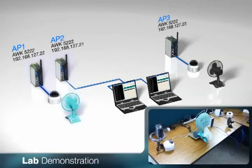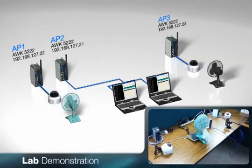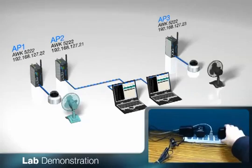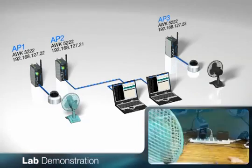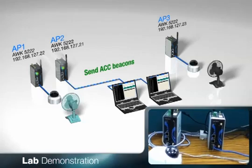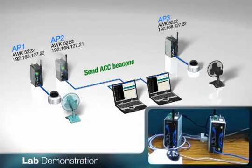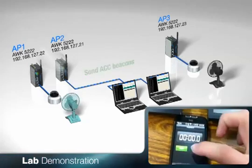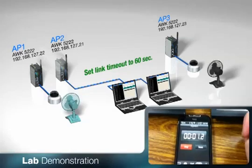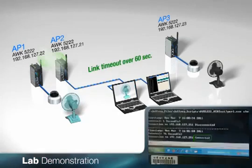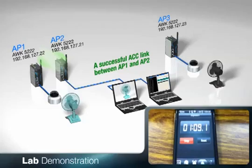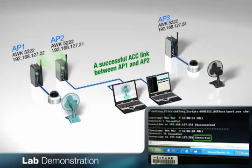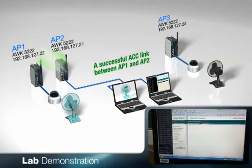First, let's watch ACC establish a link between AP1 and AP2. As the AWKs are powered on, the boot LEDs will flash. Once startup is finished, the APs will start sending ACC beacons and attempt to find the best ACC candidate to link with. We can see that the connection has been established and the wireless LAN LEDs on both AP devices are flickering. If we look at the left laptop, we can see that the connection checker command line script has recorded a successful link. When we refresh the webcam page, we can see the green fan.